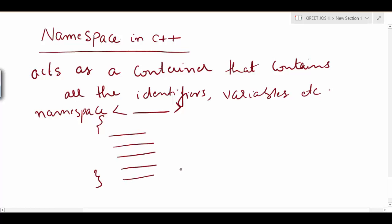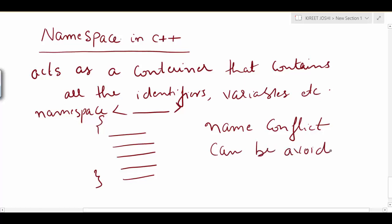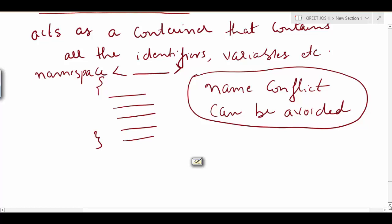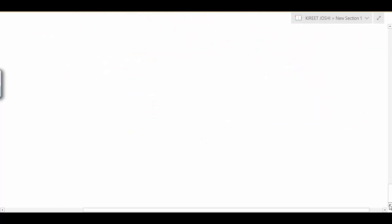The main advantage of using namespace in C++ is that it reduces the name conflict. Name conflict can be avoided by using this concept of namespace. We will see a scenario and on the basis of that scenario we will understand what is the use and need of namespace.